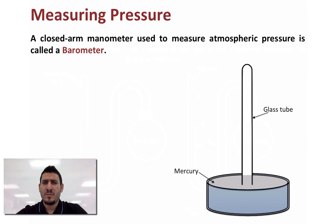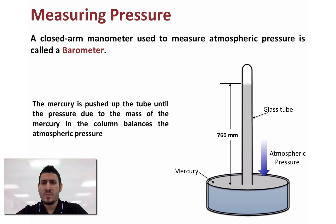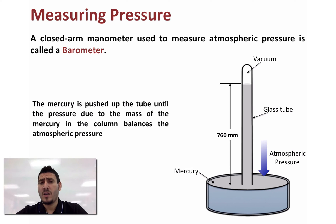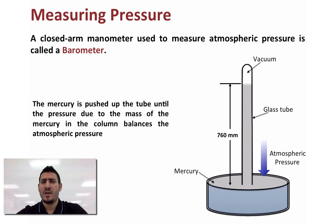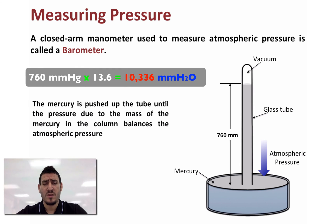A common example of a closed arm manometer is the barometer, an instrument used to measure atmospheric pressure. The mercury is pushed up the tube until the pressure due to the mass of the mercury column balances the atmospheric pressure. The height of the mercury column equals the atmospheric pressure — that's why one atmosphere equals 760 millimeter Hg. Mercury is used because it is the heaviest liquid and therefore gives the shortest column height. If water were used, you'd have to multiply 760 mm by the density of mercury (13.6), giving a much taller column.